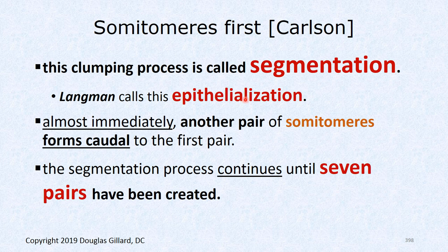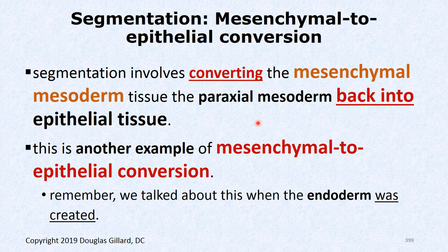Almost immediately after the first pair of somatomeres forms, another pair forms immediately caudally to those, and eventually you get seven somatomeres. Segmentation also involves converting mesenchymal mesodermal cells back into epithelial tissue — this is kind of weird. It started as epithelial epiblast cells, was converted to a mesenchymal bottle cell through the primitive streak, and now we're converting it back. This is called mesenchymal-to-epithelial conversion.